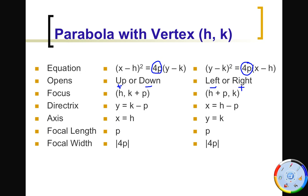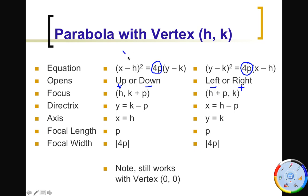This table uses the general vertex (h, k), but if your vertex is (0, 0) it still works — h and k are just zero, so it simplifies to x² = 4py or y² = 4px. Make sure you understand that this is the same thing for a vertex at the origin.